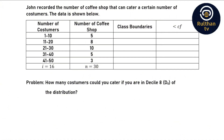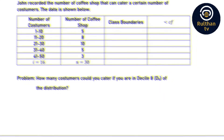The situation is: John recorded the number of coffee shops that can cater a certain number of customers, and the result is recorded below. The problem is, how many customers could you cater if you are located in decile 8 of the distribution? Now, there are four steps I would like to suggest for us to follow in order to solve a decile problem.